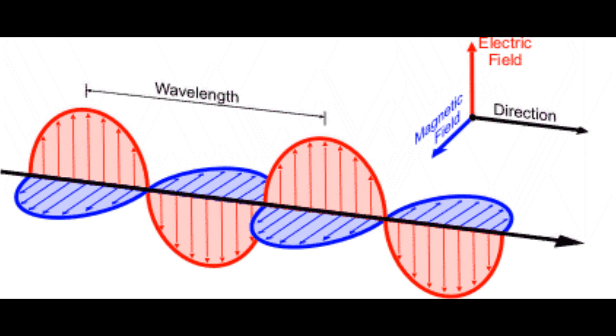The most important property of an electromagnetic wave is its wavelength, which is the distance between two successive crests. Another important property is polarization, which is the direction that the electric field oscillates in.